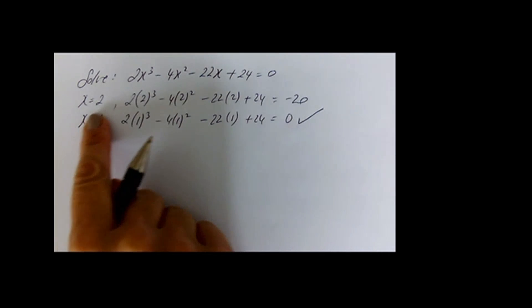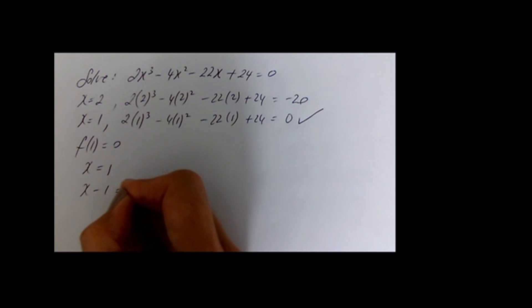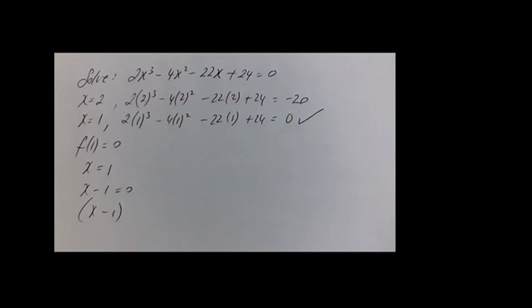Since f(1) equals 0, x equals 1 is a root and x minus 1 is the factor. Now we divide by x minus 1 to get the other factors. Dividing in gives a quadratic, and we solve that quadratic to find all the solutions to the cubic.